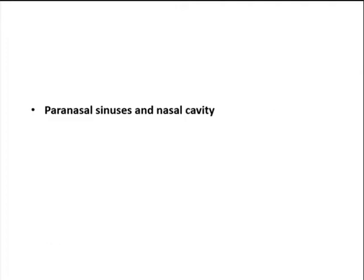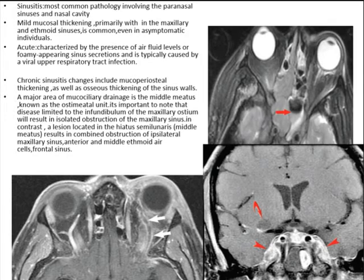We will start with the paranasal sinuses and nasal cavity. The most common pathologic entity of the sinuses is sinusitis, usually showing as mild mucosal thickening, most commonly in the maxillary and ethmoid sinuses, even in asymptomatic individuals. Acute sinusitis is characterized by air-fluid levels or foamy-appearing sinus secretions, typically caused by a viral upper respiratory tract infection. In chronic sinusitis, there is mucoperiosteal thickening as well as osseous thickening of the sinus wall. A major area of mucociliary drainage is the middle meatus, also known as the osteomeatal complex.